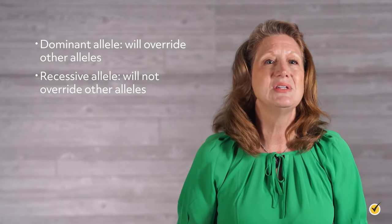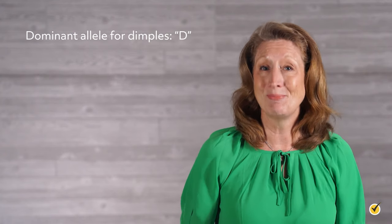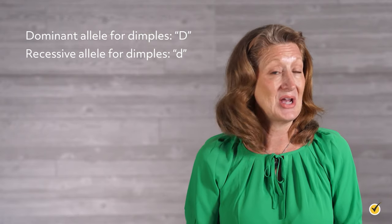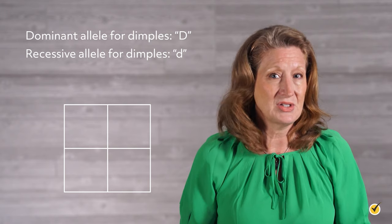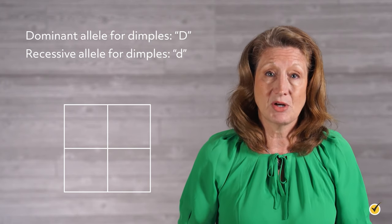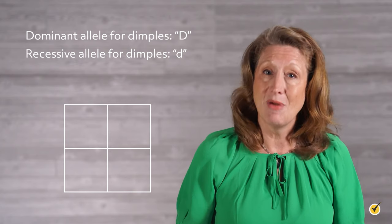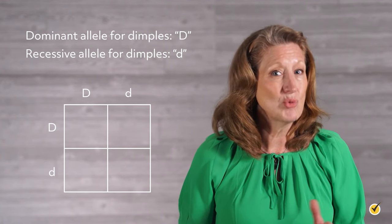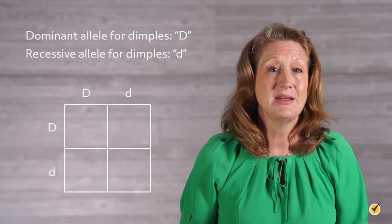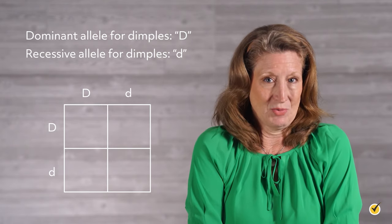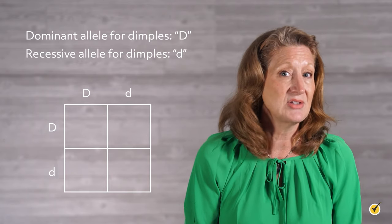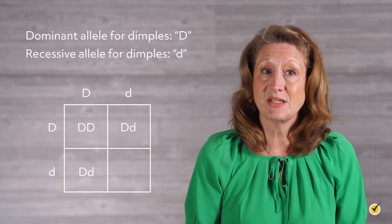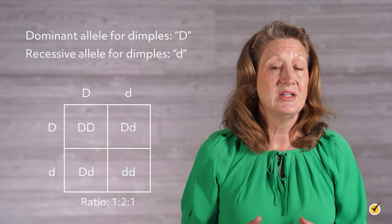Let's look at this in more detail using a dimple mutation. The dominant allele means you have dimples, so we'll assign it the capital letter D. The recessive allele means you don't have dimples — we'll assign it the lowercase d. If we draw a simple Punnett square, we can determine a genotypic and phenotypic ratio for dimples. For this example, mom and dad are both heterozygous for dimples with genotype Dd. Filling in the Punnett square, our result shows one offspring that is homozygous dominant DD, two offspring that are heterozygous Dd, and one that is homozygous recessive dd. The ratio is 1 to 2 to 1.